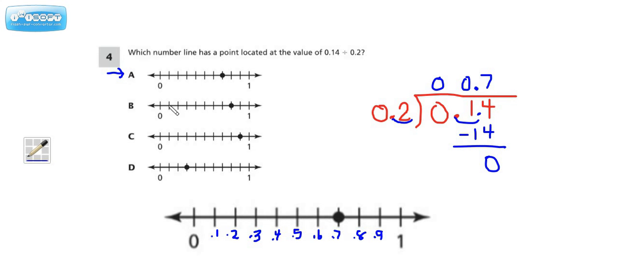So this would be 1 tenth, 2 tenths, 3 tenths, 4 tenths, 5 tenths, 6 tenths, 7 tenths, 8 tenths. So it's not that, because that's at 8 tenths.